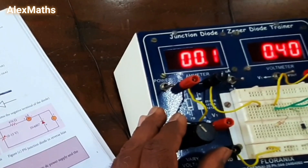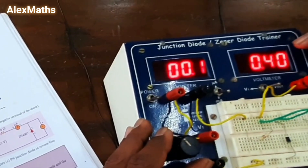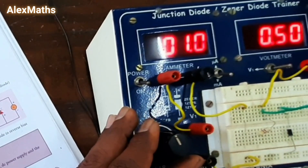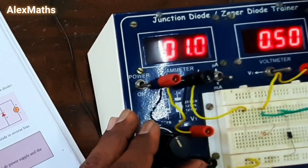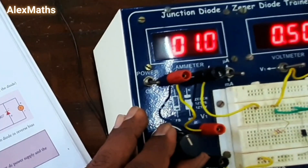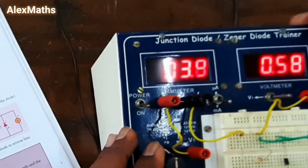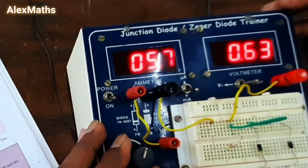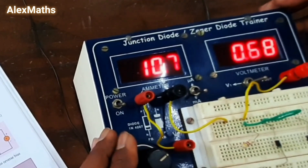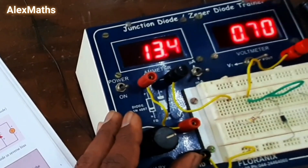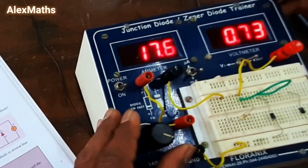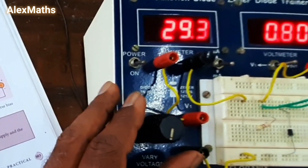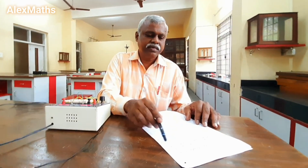For 0.4V, you are getting the current of 0.1 milliampere. Then for 0.5V, you are getting the current of 1.1 milliampere. Then for 0.6V, you are getting the current of 4.5 milliampere. For 0.7V, you are getting the current of 13.4 milliampere. And for 0.8V, you are getting 29.3 milliampere. The readings are noted in the tablet column.